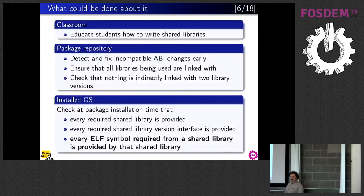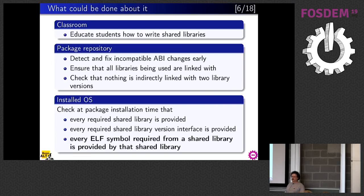What can be done about it? The first line of defense is of course education — we should teach developers how to write shared libraries properly. But that's not going to reach everyone. So the second line of defense is our repositories: we should have tooling to detect all these ABI incompatibilities as early as possible. It's not really easy — it's hardly possible to do without human intervention because tools that compare ABIs have false negatives.